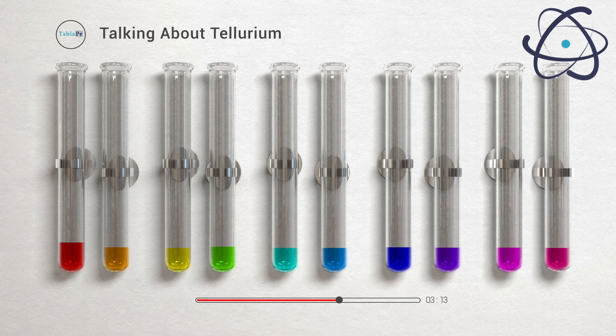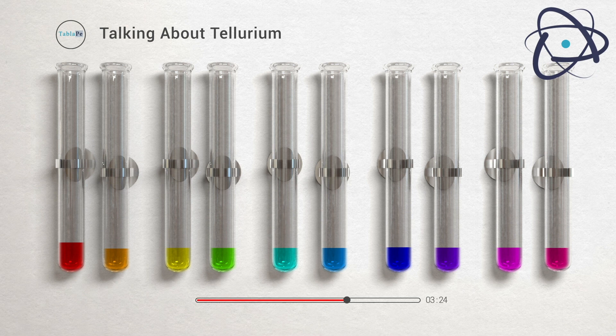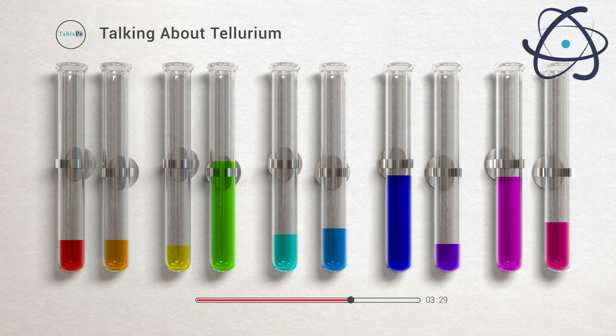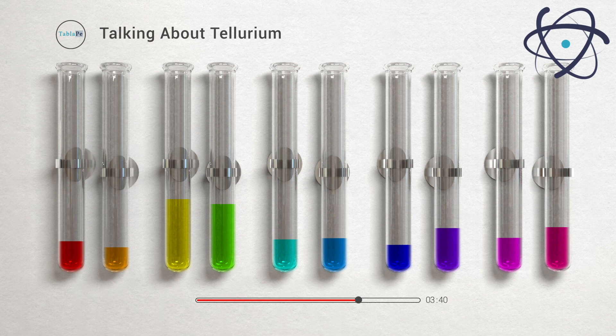Tellurium has two allotropes. One is crystalline—this form consists of parallel helical chains of atoms which resist oxidation by air. Another form is amorphous, produced by precipitating telluric acid from a solution of the metal. When crystalline, this element is silvery-white.